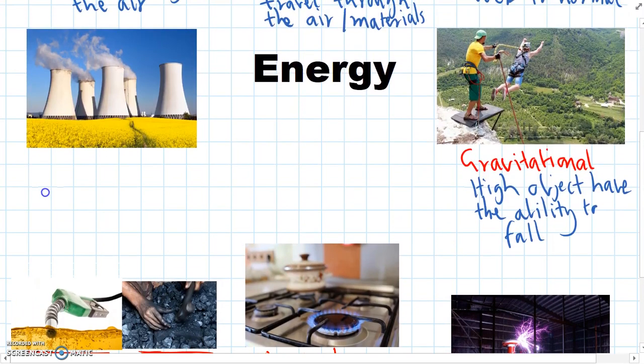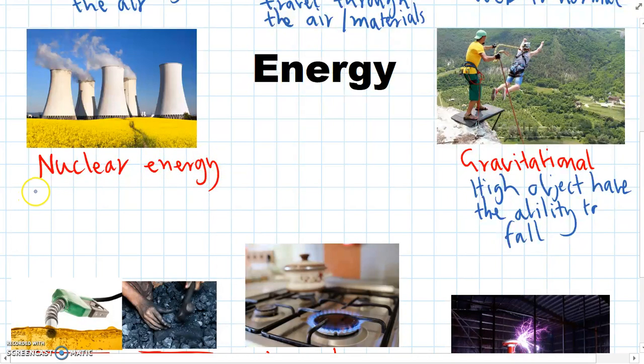The last one here, if you've ever seen a nuclear power plant before, this is one in France. We actually don't have any in Australia. But nuclear energy is the final type of energy that we'll look at. And this is energy that's stored inside atoms, which are the smallest whole particles. So chemicals are made up of atoms, and inside those atoms, there's nuclear energy stored.